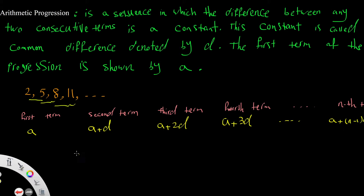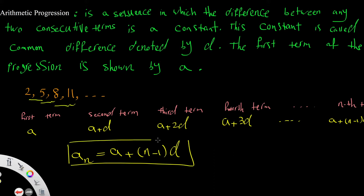So we found the formula: in order to find the nth term in an Arithmetic Progression, use the formula a + (n-1)d, where n is the position of the term, a is the first term, and d is the common difference.